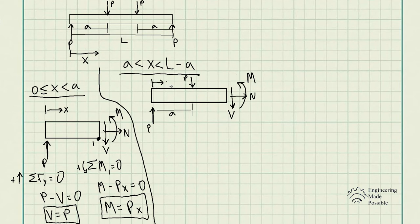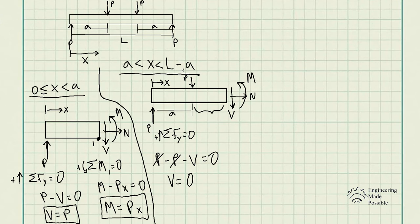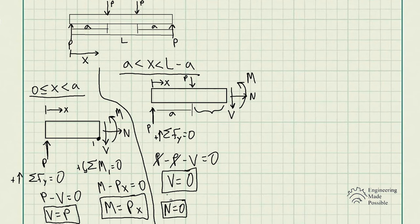Sum of forces in the Y direction for this segment: the reaction P minus the external force P minus V equals zero, so V equals zero. Within the middle portion, between A and L minus A, there is no internal shear force being developed. By visual inspection, there are no external forces along the horizontal direction, so the normal force N is also zero.